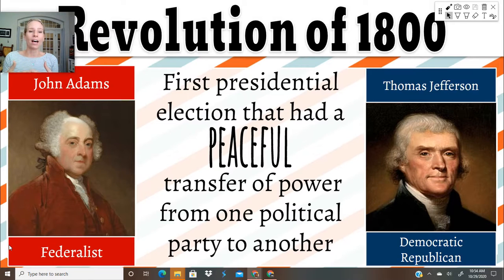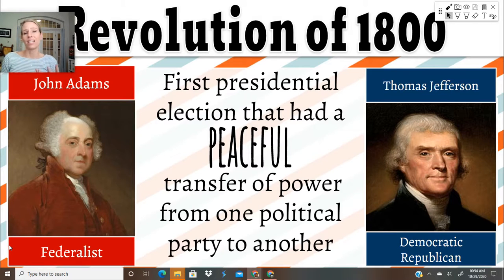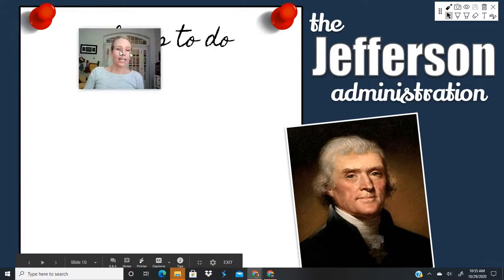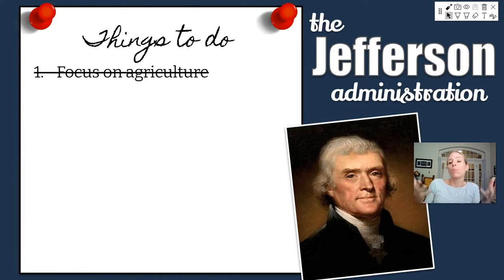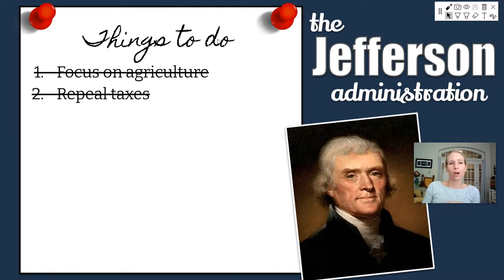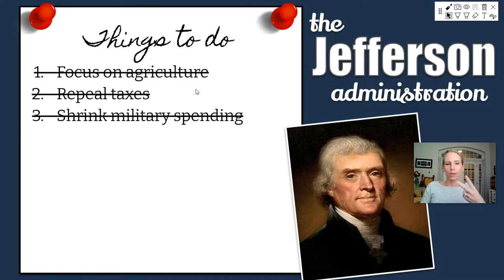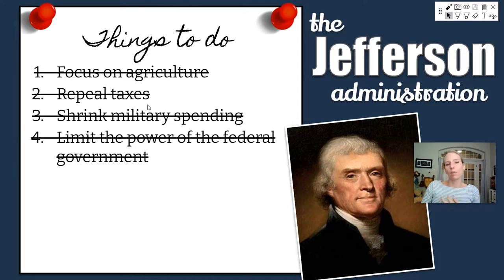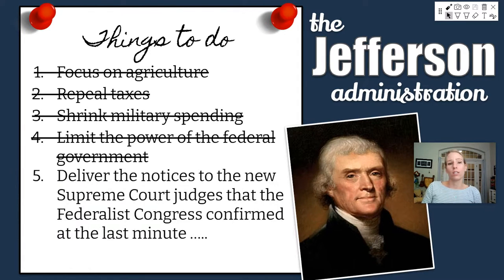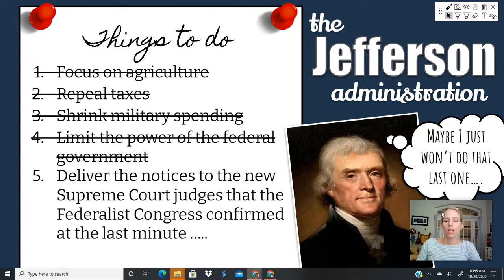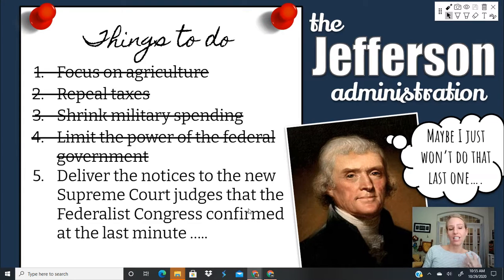This peaceful transfer is what other countries need to symbolize strong political stability. John Adams said 'I lost, farewell,' and Thomas Jefferson walked into the White House as a Democratic-Republican. With Democratic-Republicans sweeping Congress, they made changes — very common when another political party takes power. Thomas Jefferson focused on agriculture, repealed whiskey taxes, shrank military spending, and limited the power of the federal government. Meanwhile, the Federalists attempted court packing — having lost power in Congress and the executive branch, they tried to maintain power in the judicial branch.